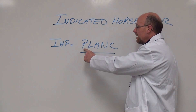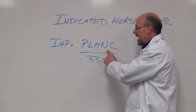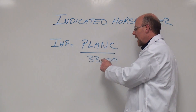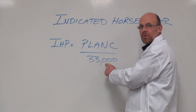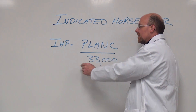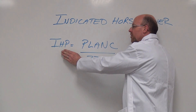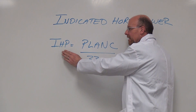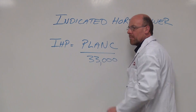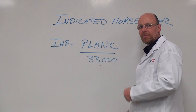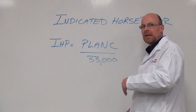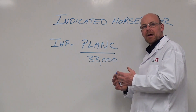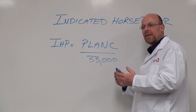These are factors, so they're all multiplied together, divided by 33,000 to give us our theoretical, or indicated, horsepower — the value a manufacturer would use to design an engine with a certain amount of horsepower.